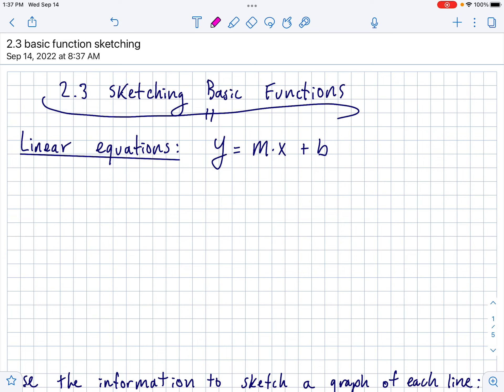Before we get into the actual graphs of functions, I want to remind you guys about y equals mx plus b. You guys have seen this before, but just a quick refresher, that m is your slope. So slope is a rise over run, another way to find it is y2 minus y1, all over x2 minus x1, if you're given two coordinates.